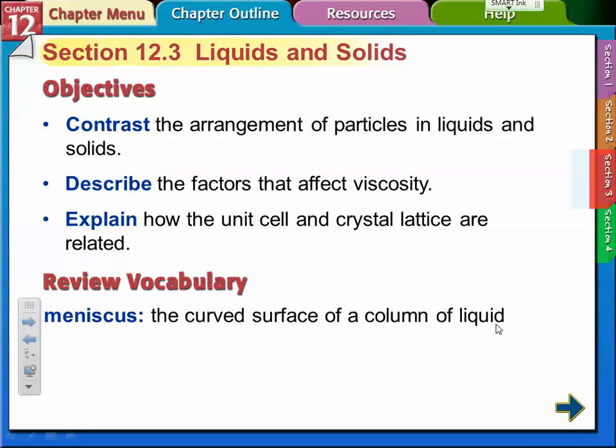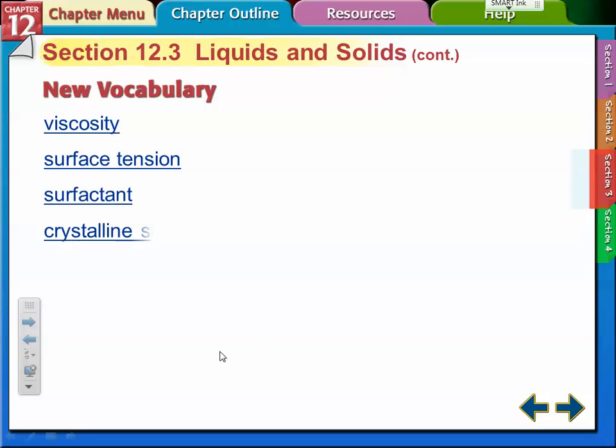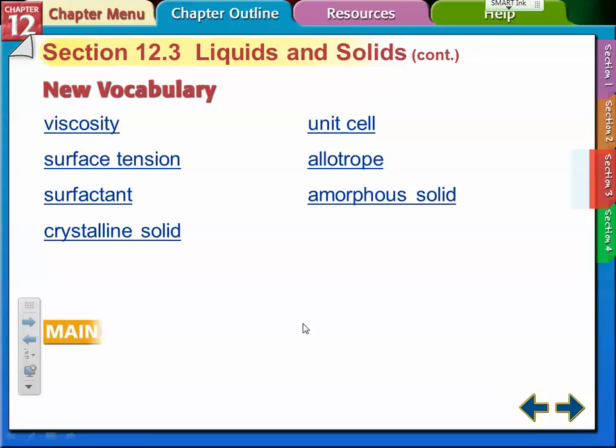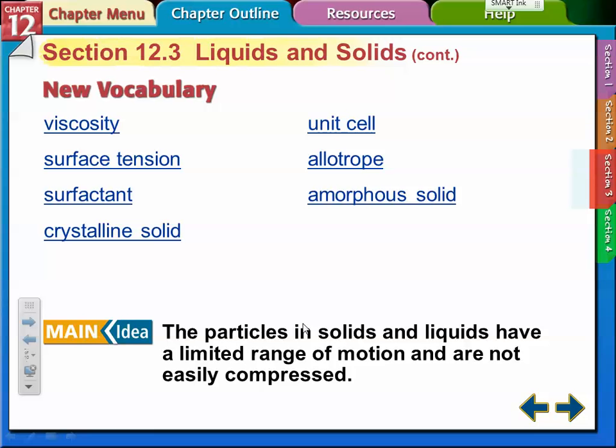Meniscus, that's the curved surface at the bottom of a column of liquid. New vocabulary: viscosity, surface tension, surfactants, crystalline solid, unit cell, allotrope, and amorphous solid.